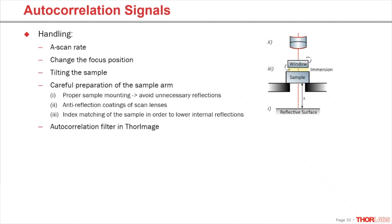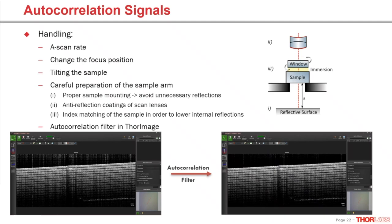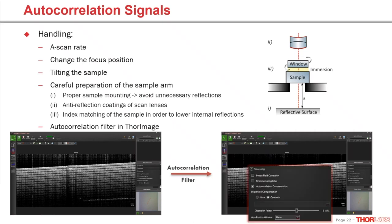Our ThorImage software also offers an autocorrelation filter to cancel out these signals. Like any broadband algorithm, the filter effect may vary depending on the sample. In one example, I'm imaging a multilayered foil with an autocorrelation artifact at the top. After applying the filter, the overall intensity of the autocorrelation artifact is significantly decreased. You can apply the filter by clicking the checkbox named 'autocorrelation compensation' to the right of the OCT image.